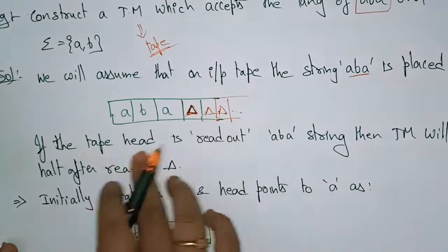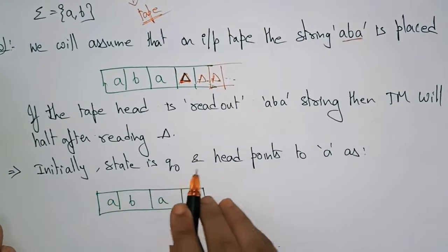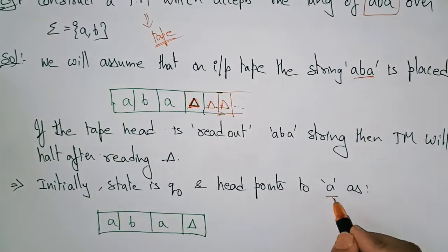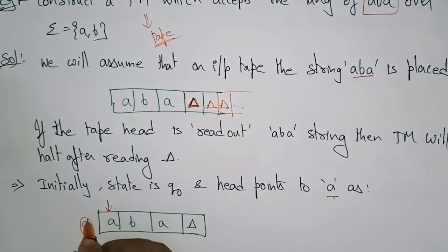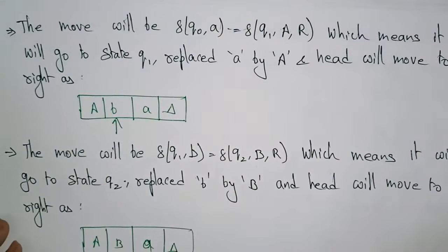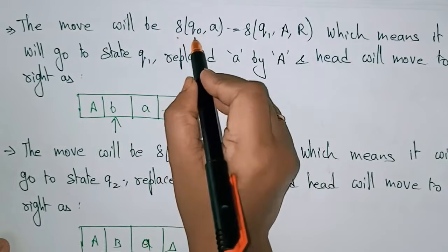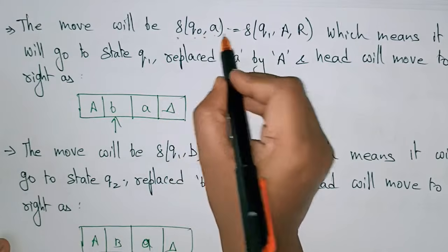Initially, the state is Q0 and the head points to A. So the first step: the head has to move to the right side. The transition function for Q0 with input symbol A will define where we move next.